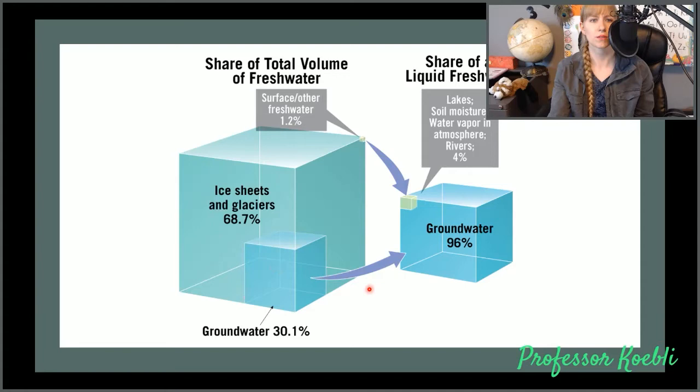Let's look over the total amount of fresh water that we have available to us. 68.7% of fresh water is actually locked away in ice sheets and glaciers, with only 30% of it as groundwater. And of that 30% of other fresh liquid water, surface and other fresh water only makes up 1.2% of it. Lakes, soil moisture, water vapor, and atmosphere, and rivers make up 4%, and groundwater is the other 96%.